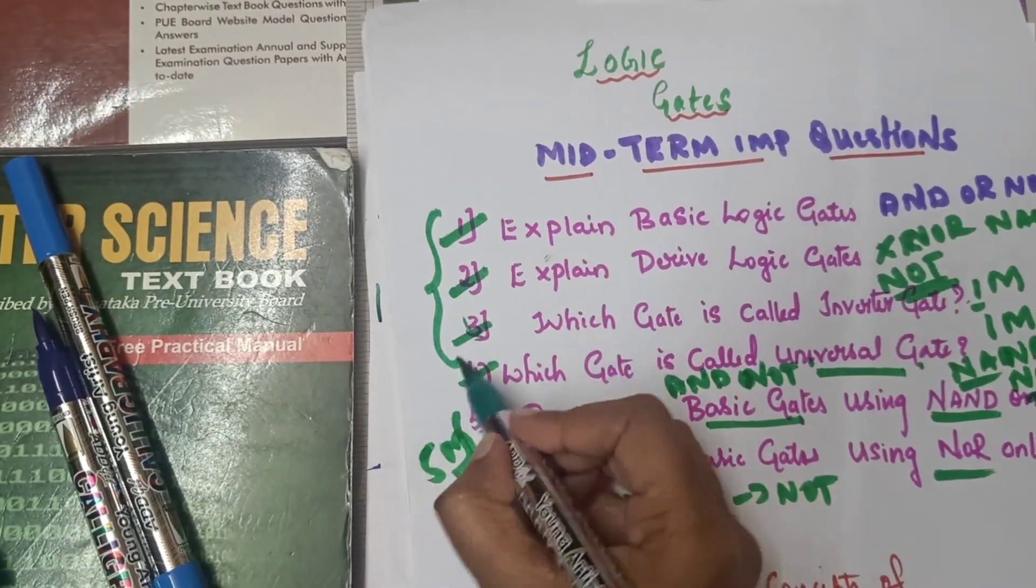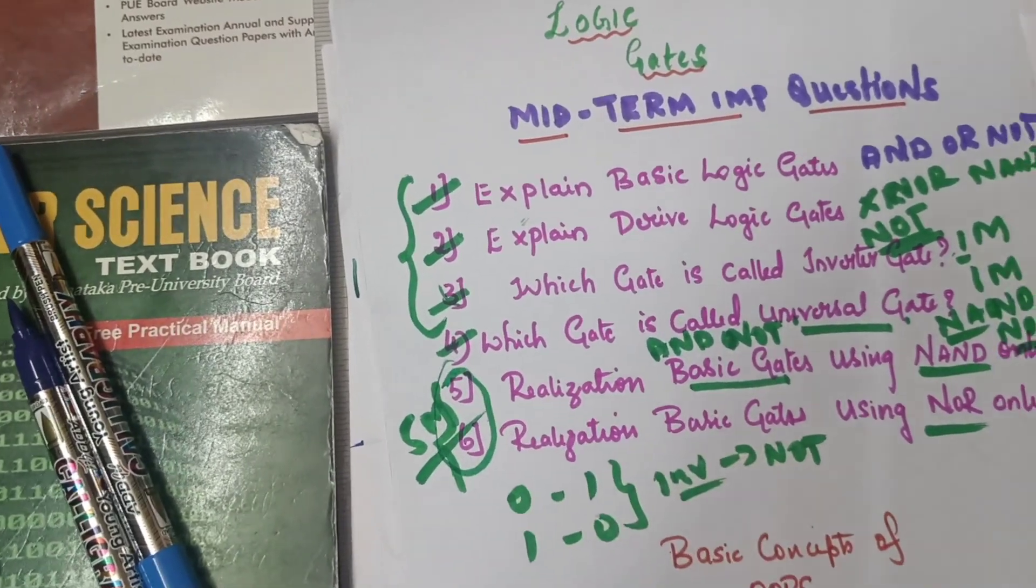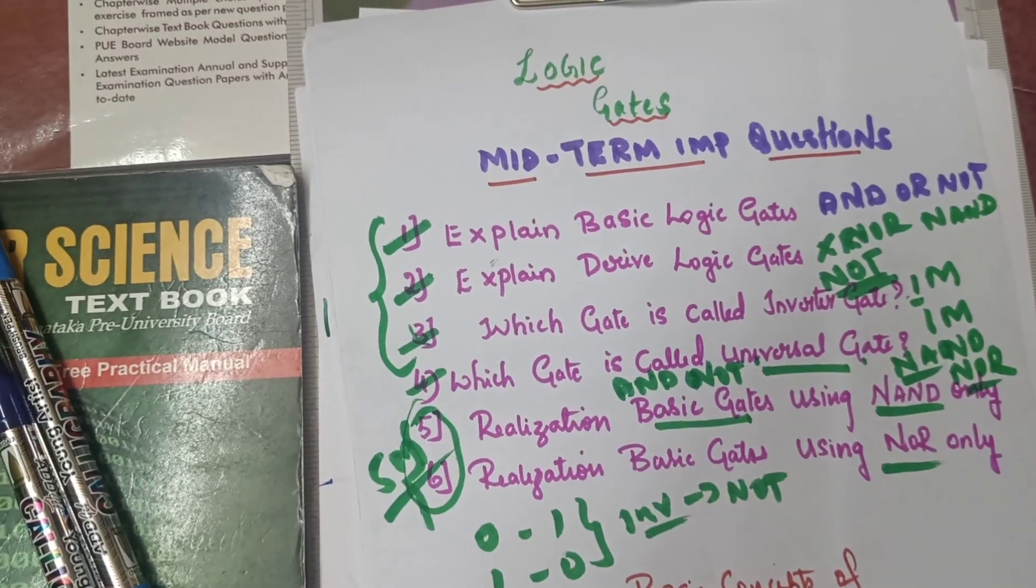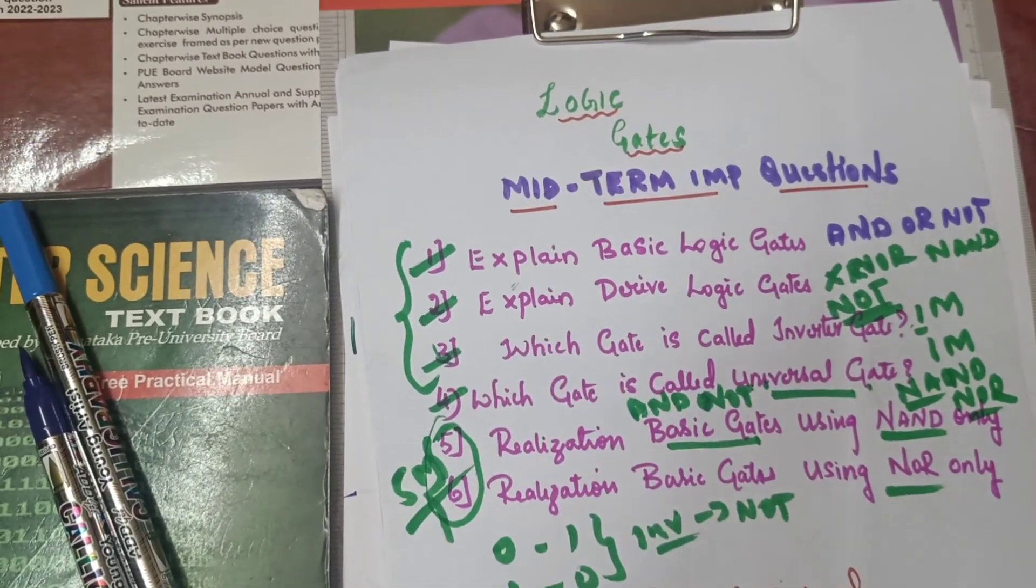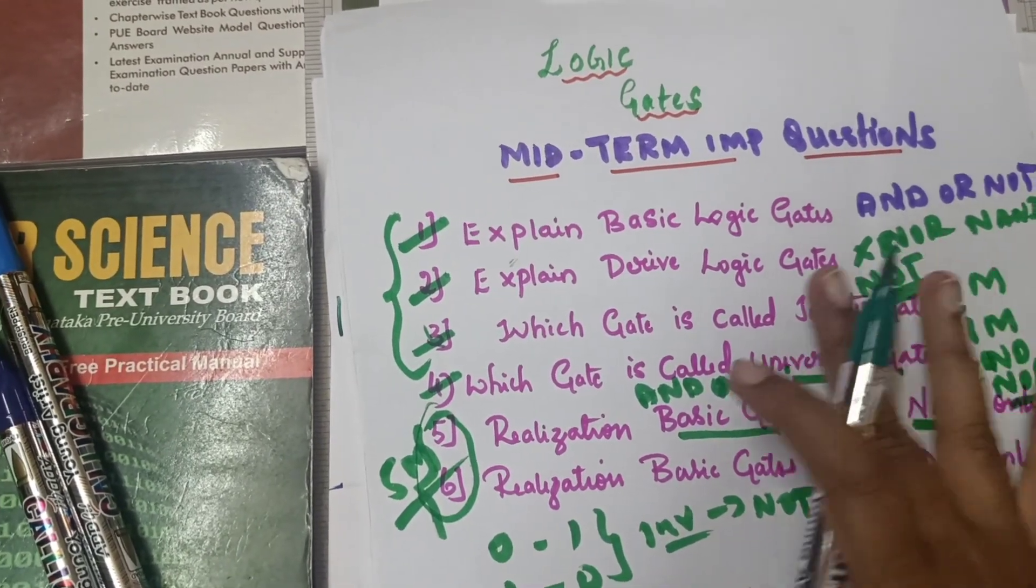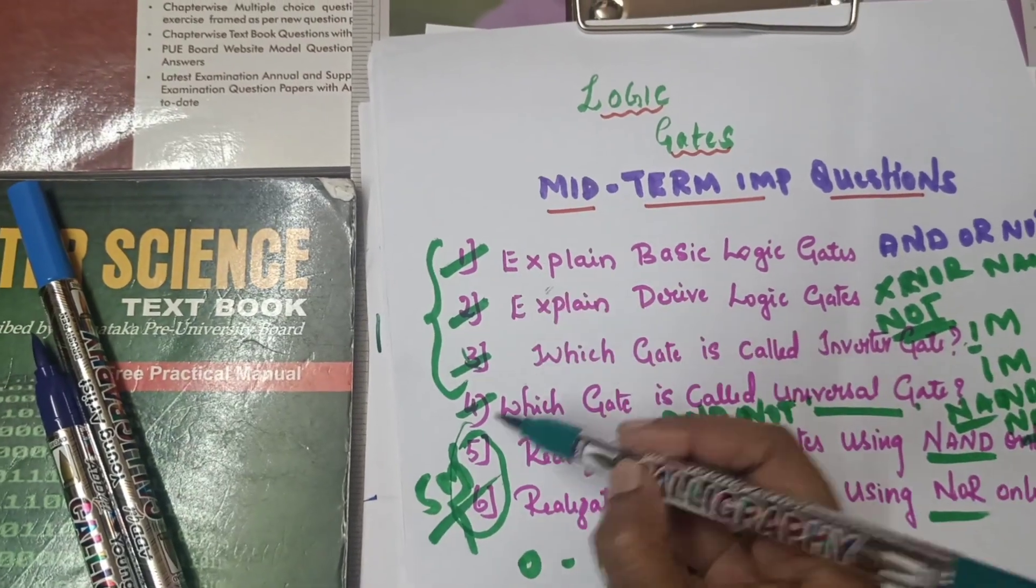First, these are 4 questions. We focus on these 4 questions. First priority is these 4 questions. 100% of these 4 questions, you have a lot of chances. First of all, this chapter has a lot of weightage, but in that case, you focus on these 4 questions.